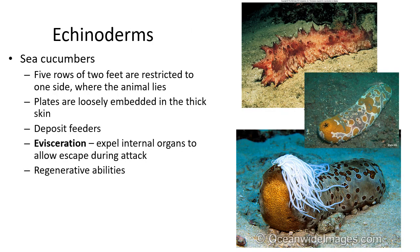Sea cucumbers are pretty weird — they also have penta-radial symmetry. You can see five segments along their worm-like shape. Two of their tube feet rows are on one side, generally staying on the bottom of the ocean. They are deposit feeders, waiting for things to fall down and eating that. As a defense, they can actually excrete their digestive system, which scares predators away — kind of crazy.